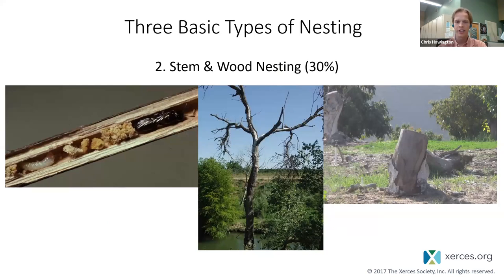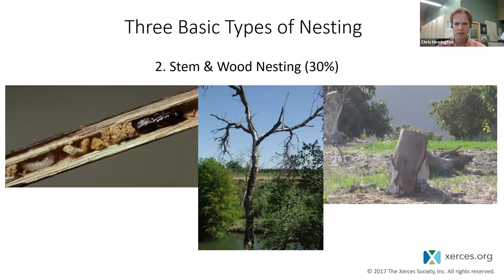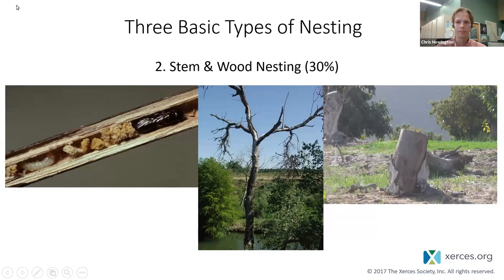The second type of nesting is stem and wood nesting bees. These generally nest in either dead standing wood, hollow wood, or inside the stems of living plants themselves. Dead standing wood is fantastic nesting space for a lot of insects because it's easy to burrow in and create a nesting spot. You can see in the leftmost photo a bee lodged in there — that's what it calls home. Large branches that have fallen on the ground are also great habitat. This composes about 30% or so of all bee species.